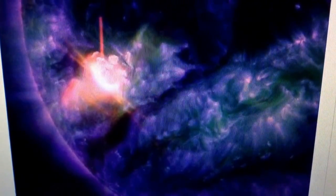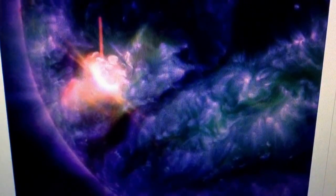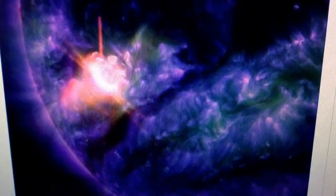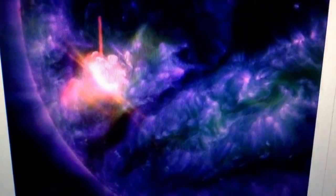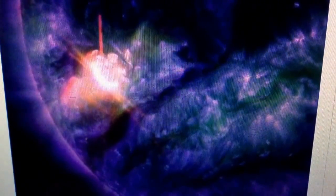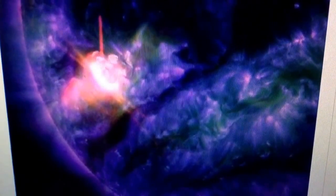This one's an M5 class. The Sunspot AR2297 is extremely active, literally just erupting solar flares one after another. There were two of them yesterday on March 9th, 2015.